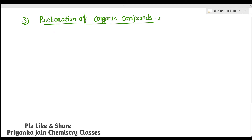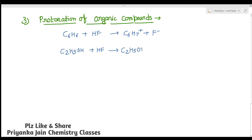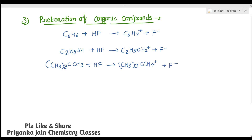Another important reaction in liquid HF is the protonation of organic compounds. For example, benzene dissolved in liquid HF gives C₆H₇⁺ plus F⁻, meaning benzene gets protonated. Similarly, ethyl alcohol (C₂H₅OH) dissolved in liquid HF gives C₂H₅OH₂⁺ — its protonation occurs. In this way organic compounds can be protonated in liquid HF.